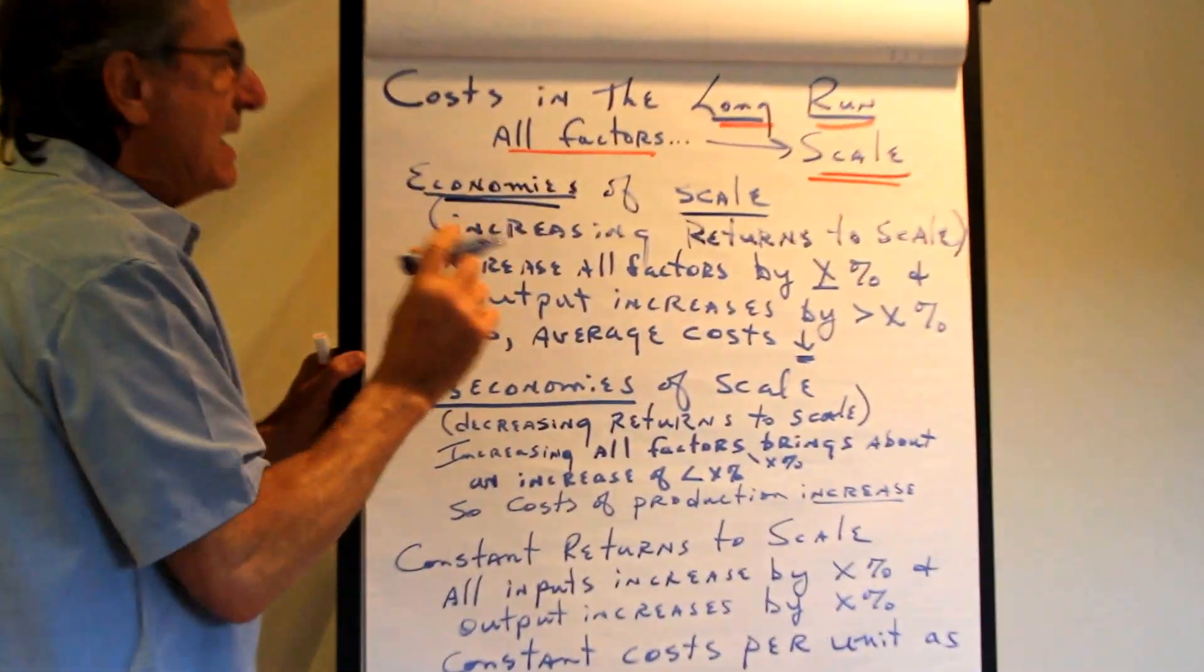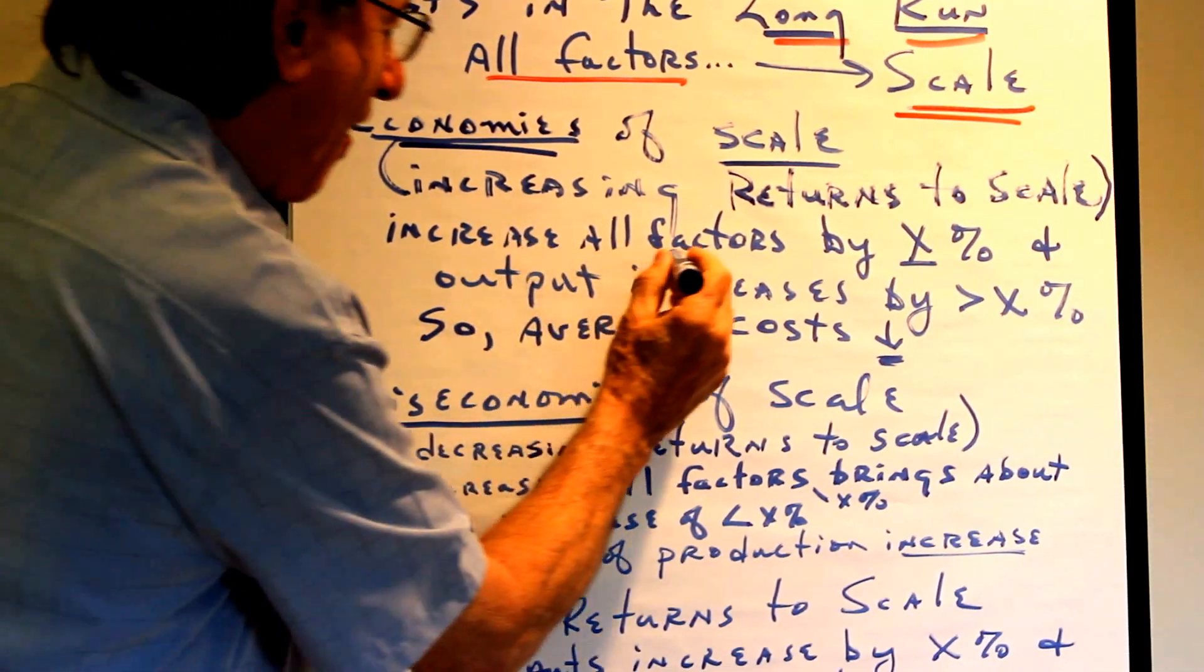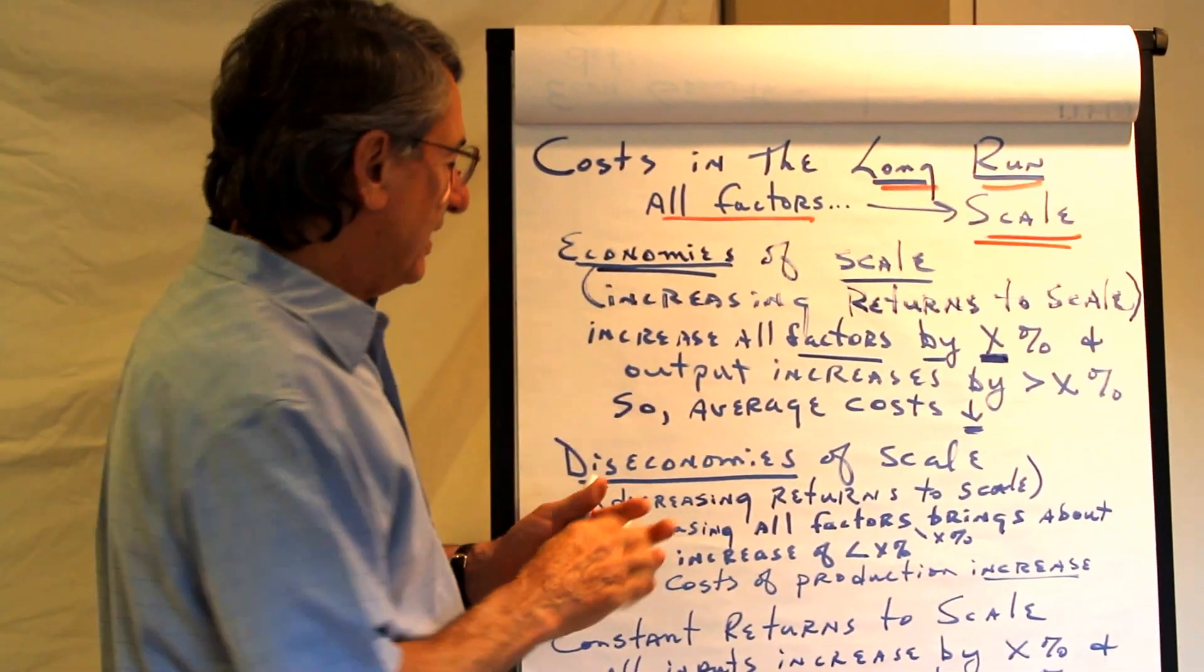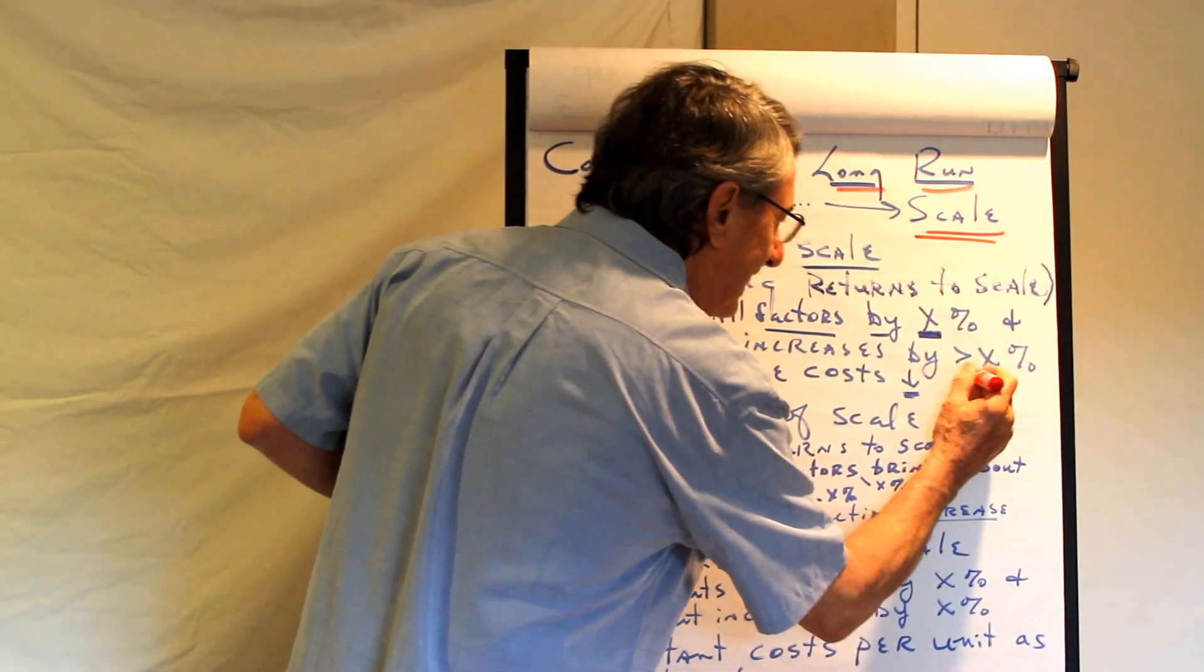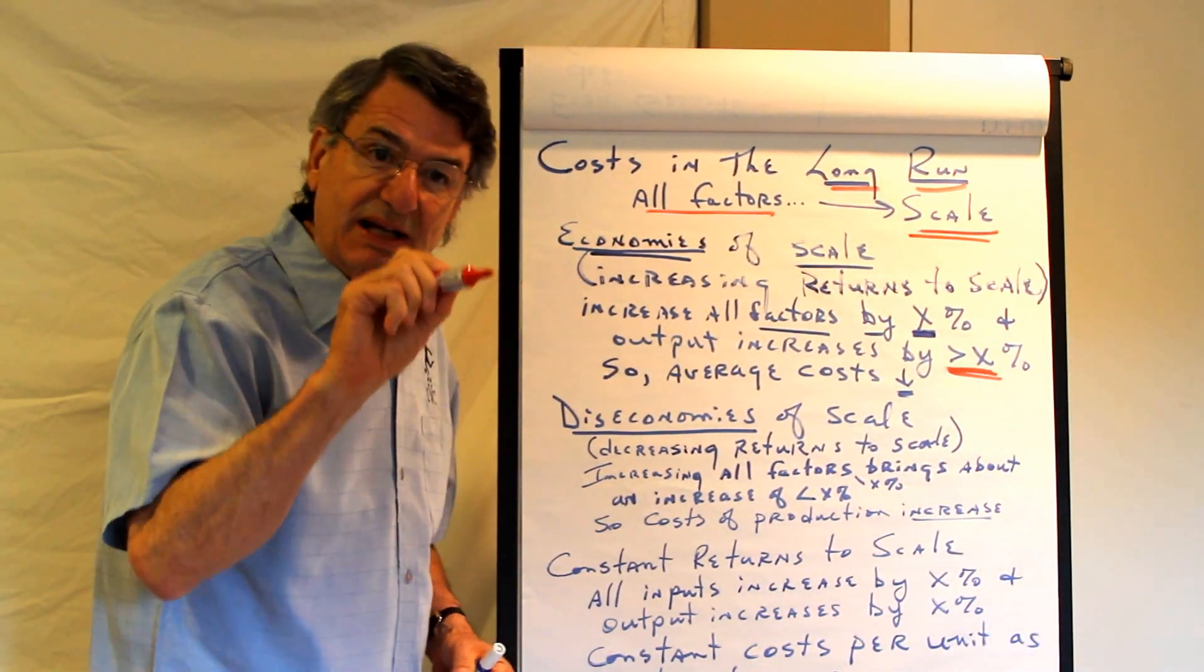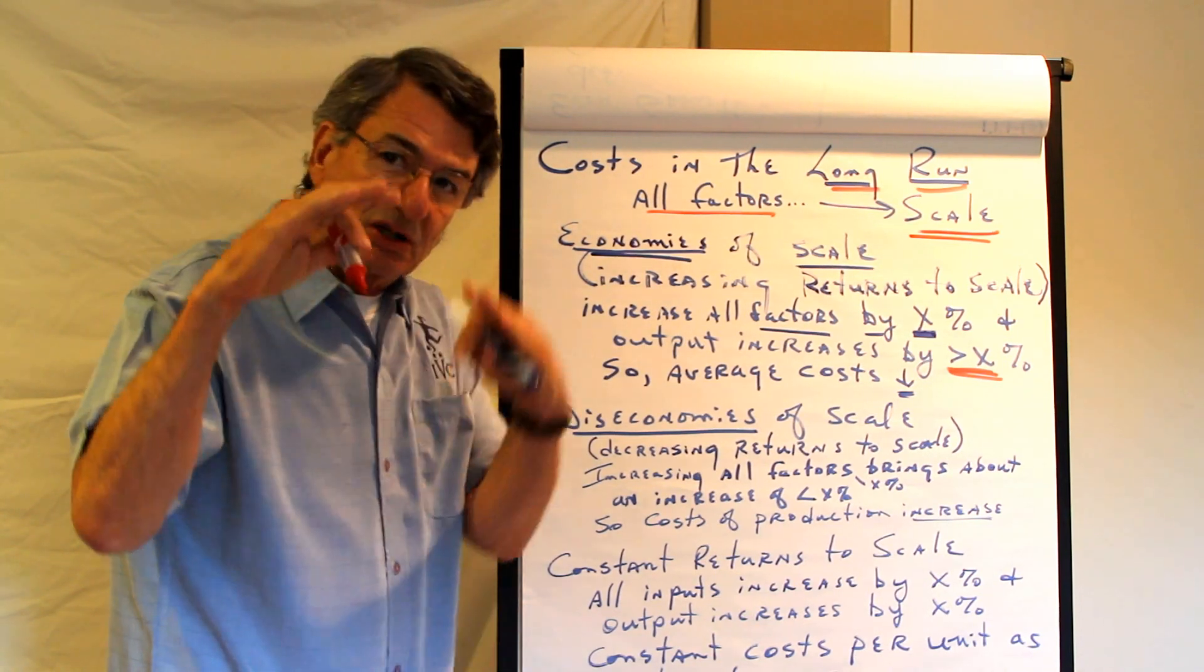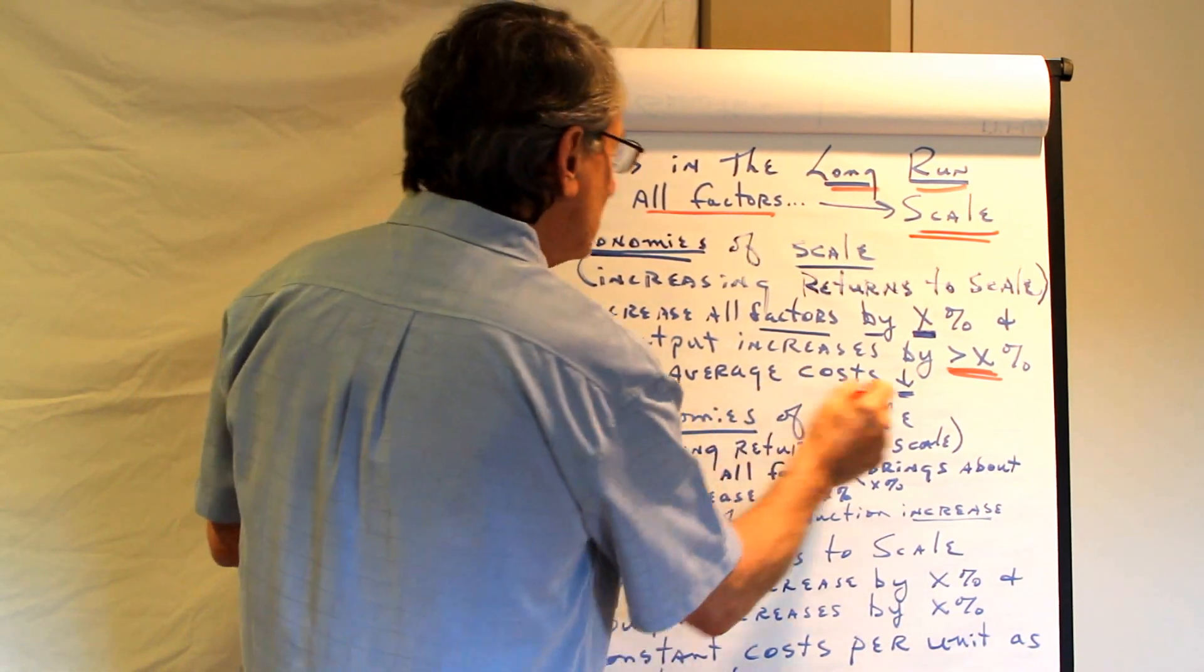Economies of scale. Assume that the firm increases all the factors of production by some percent, say 10%. It buys more land, labor, capital, and entrepreneurship. So it can produce more of everything. But how much additional output does it get? If it's experiencing economies of scale, it gets more than 10% increase in production. So 10% increase in resource costs causes an output increase of more than 10%, which means your costs for each unit are going down because you're becoming more efficient. So average costs decrease.